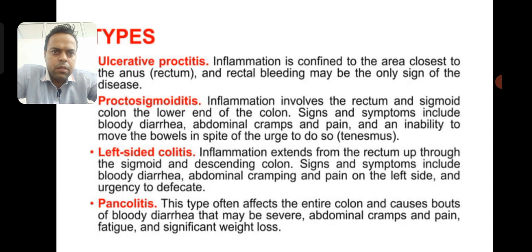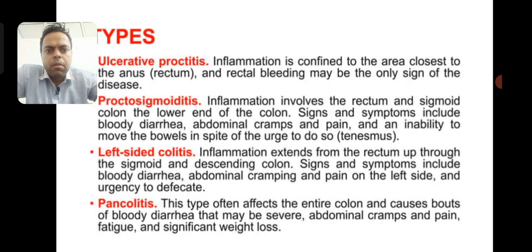Types of ulcerative colitis: In proctitis, inflammation is confined to the area closest to the anus, and rectal bleeding may be the only sign. Proctosigmoiditis involves inflammation of the rectum and sigmoid colon, with symptoms including bloody diarrhea, abdominal cramps, and inability to move the bowels. Left-sided colitis extends from the rectum through the sigmoid and descending colon, with bloody diarrhea, left-sided abdominal pain, and urgency to defecate. Pancolitis affects the entire colon and causes severe bloody diarrhea, abdominal cramps and pain, fatigue, and significant weight loss.